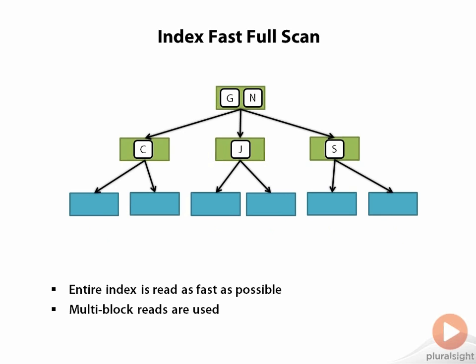In this sense, an index fast full scan operation is more closely related to a full table scan operation than to the index operations we've just looked at. What is happening is that Oracle has determined that it can get all the data it needs from the columns in the index, and it doesn't need to subsequently go and read more data from the table. In this way, Oracle is using the index as a type of lightweight version of the table.